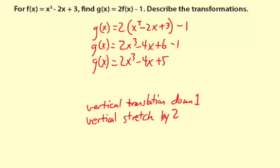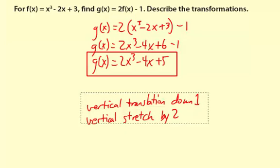So it should be g of x equals 2x to the third minus 4x plus 5. Okay, so this piece here, this is our function. And right here, these are our transformations.